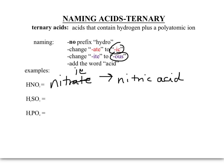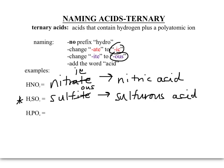In H2SO3, we know this is ternary, so we don't use 'hydro' — we just need to look at the name of the polyatomic ion. This is sulfite, and '-ite' is changed to '-ous.' However, this is not 'sulfous acid' — this is an exception to the naming rules. This is called sulfurous acid. We add in a couple of extra letters so it looks more like 'sulfur.' All acids that have sulfur in them will have this spelling change.